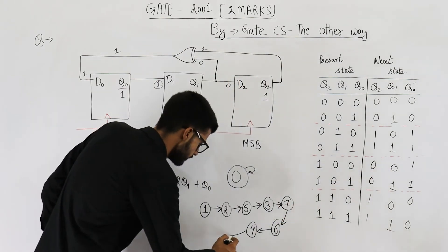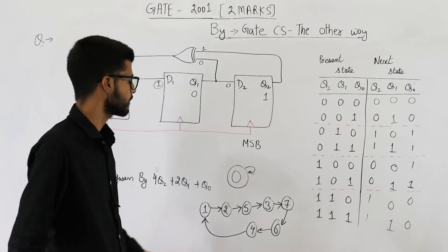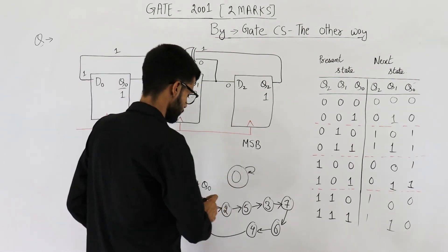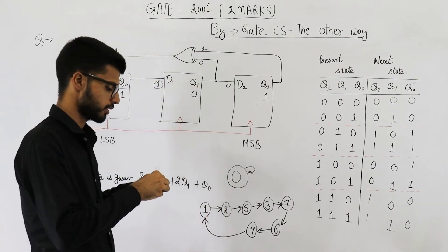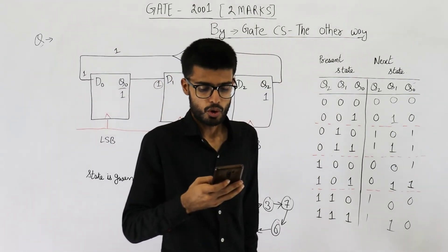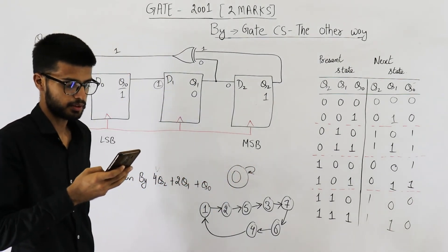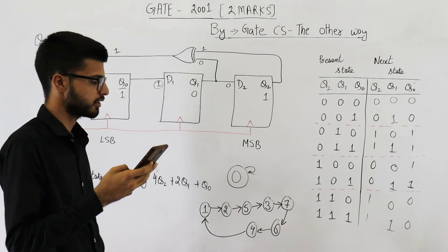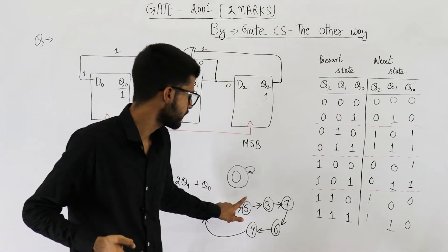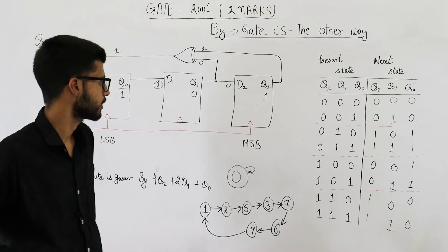That means you will reach the starting state again. This is the counting sequence. This one and this one. Let us see which option is correct. So option number B is the answer. It says 1, 2, 5, 3, 7, 6, 4. Yeah, this is the counting sequence for the given counter.